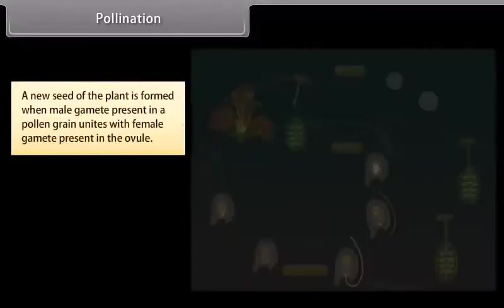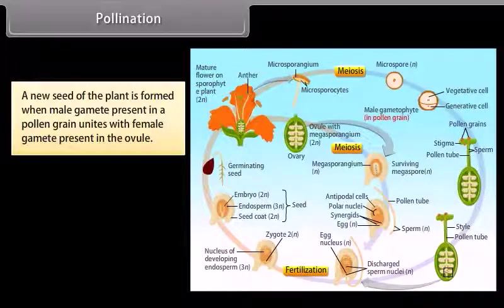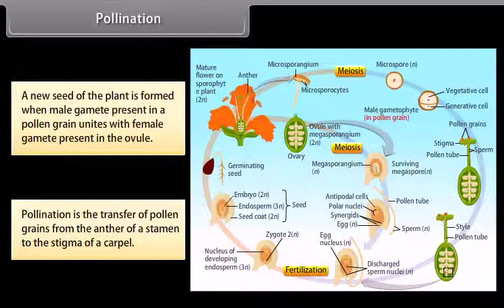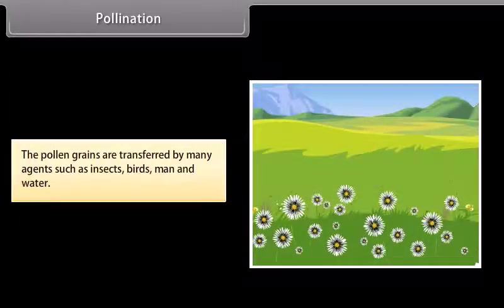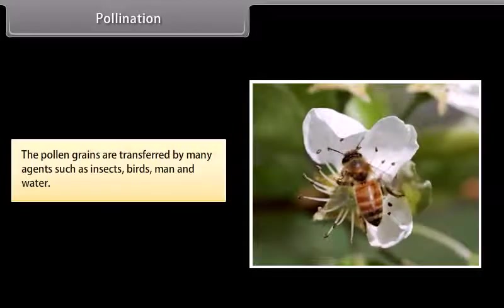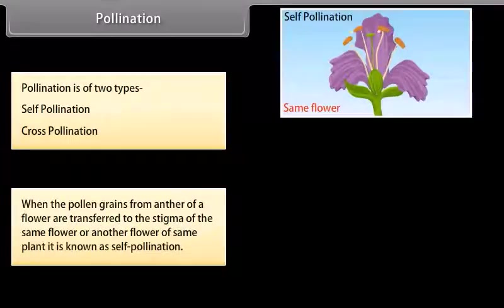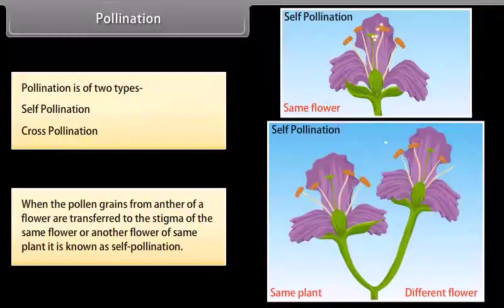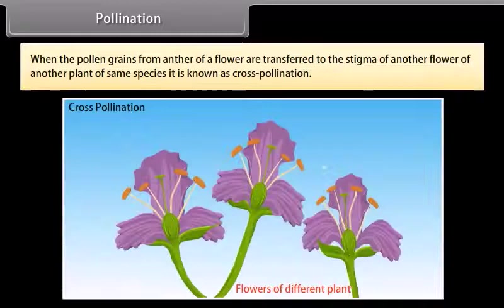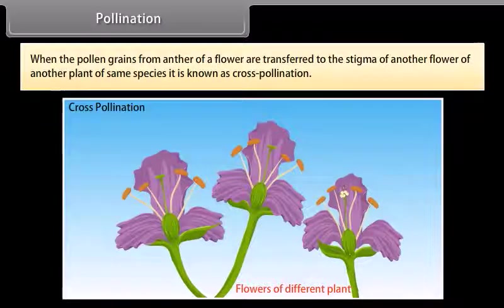A new seed of the plant is formed when the male gamete present in a pollen grain unites with the female gamete present in the ovule. Pollination is the transfer of pollen grains from the anther of a stamen to the stigma of a carpel. Pollen grains are transferred by many agents such as insects, birds, man, and water. Pollination is of two types: self-pollination and cross-pollination. When pollen grains from the anther of a flower are transferred to the stigma of the same flower or another flower of the same plant, it is known as self-pollination. When pollen grains are transferred to the stigma of another flower of another plant of the same species, it is known as cross-pollination.